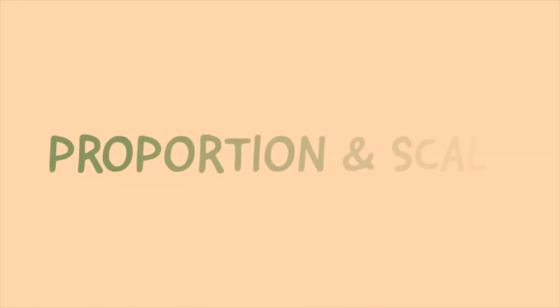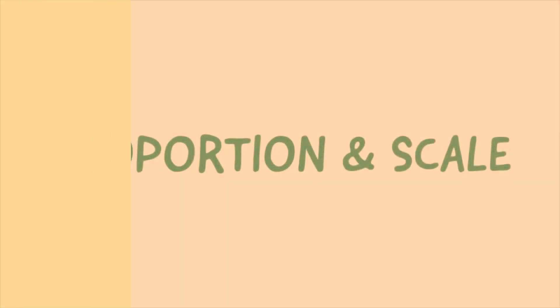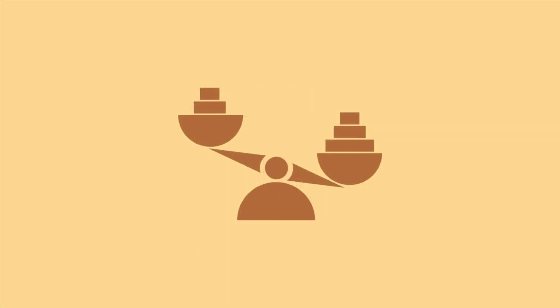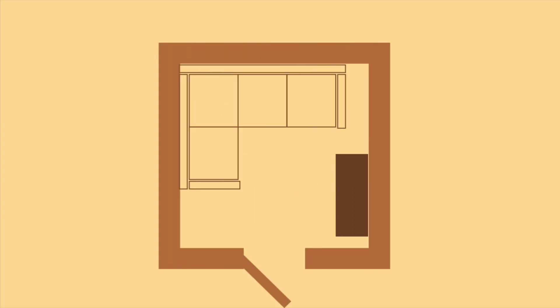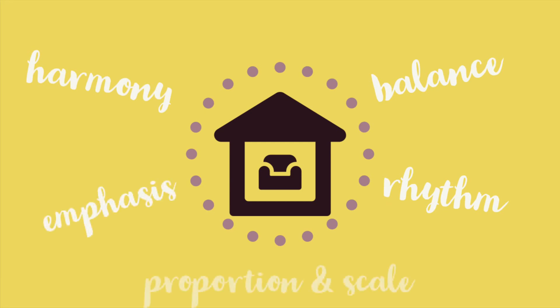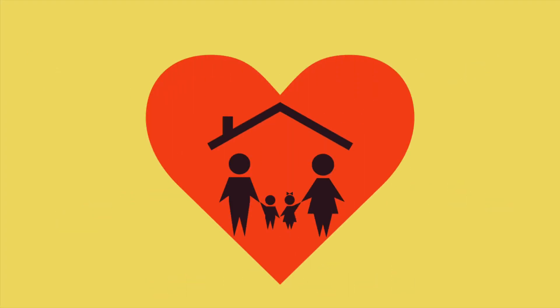The fifth principle is Proportion and Scale. Proportion is the ratio between the size of one part to another, and scale is how the size of one object relates to another or to the space in which it is placed. For instance, a large overstuffed sectional in a small room will be out of scale. These five principles of interior design are keys in creating inviting spaces that family and friends will love spending time in.